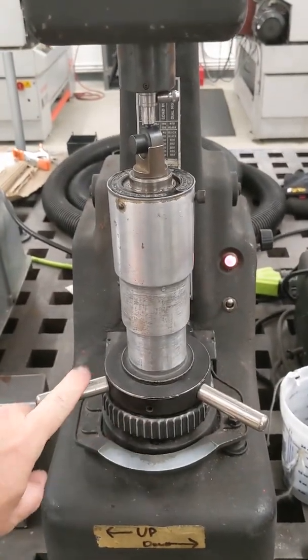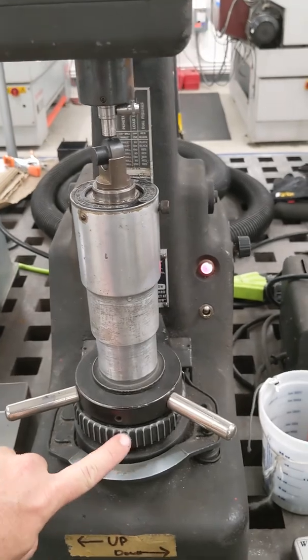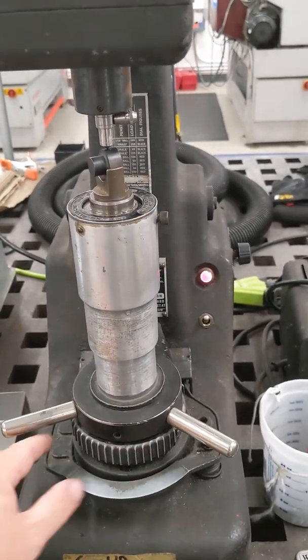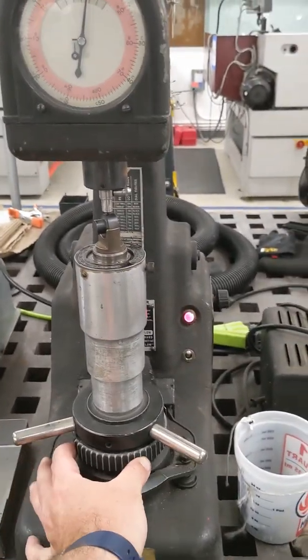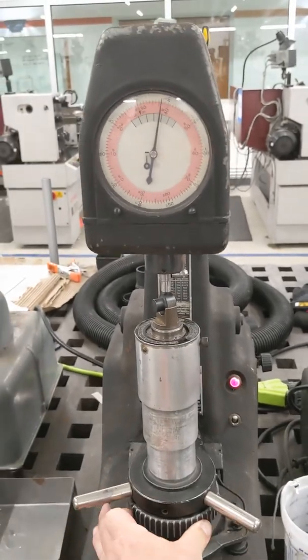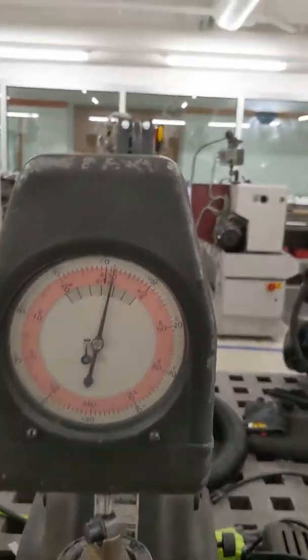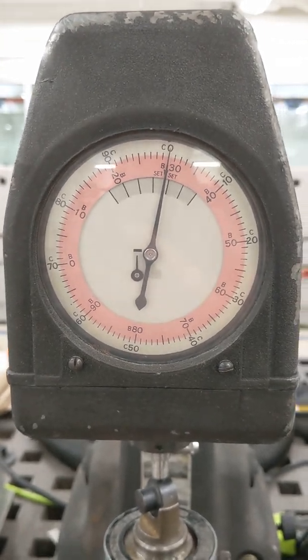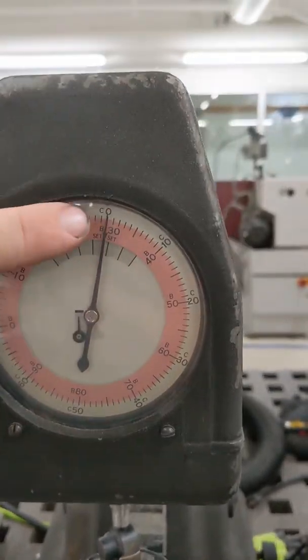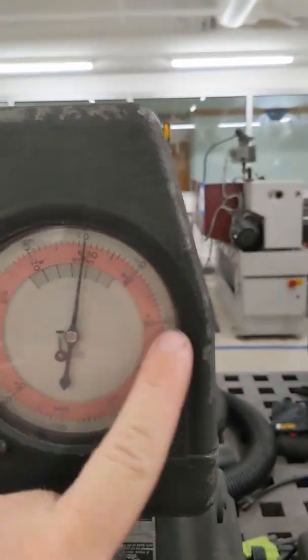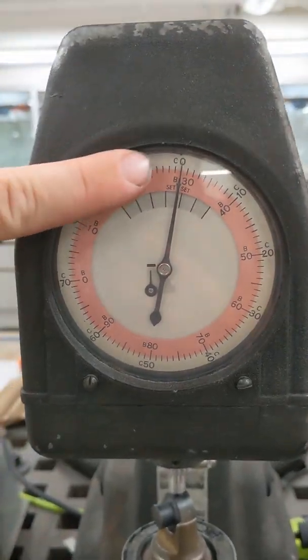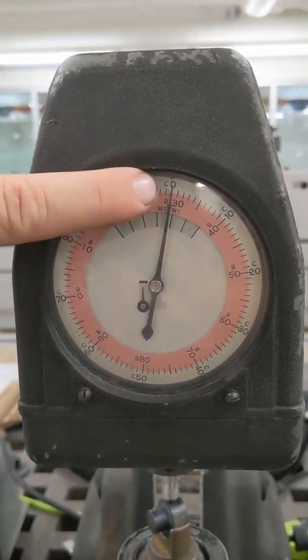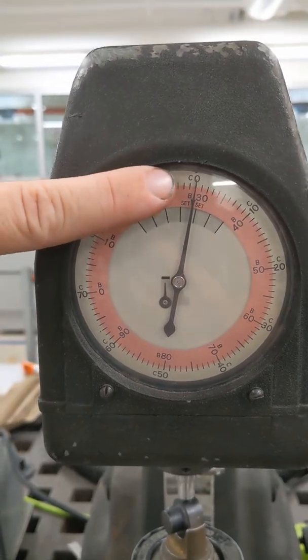Under the handle that you use to raise and lower the sample is this ribbed collar. If I rotate that back and forth, that rotates the scale, and that's how you zero your measurement. I'll rotate that collar until the needle lines up with zero. We're going to read the hardness on the outside of the scale where it's marked C. Since we're using the Rockwell C scale, we're going to read the numbers on the outside.